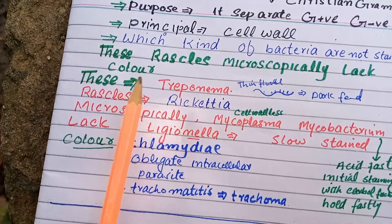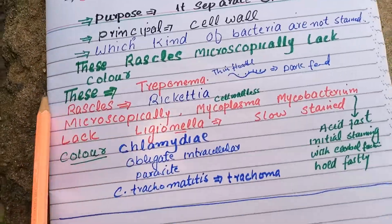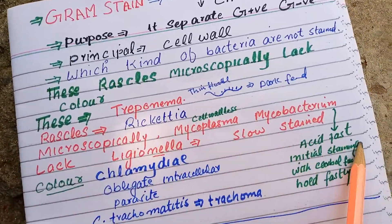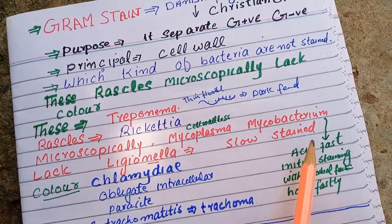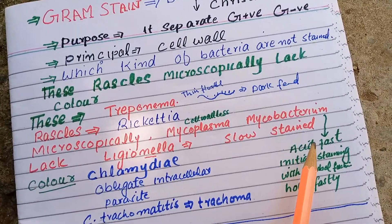Rickettsia are not Gram stained. Why? Because they are obligate intracellular parasites.